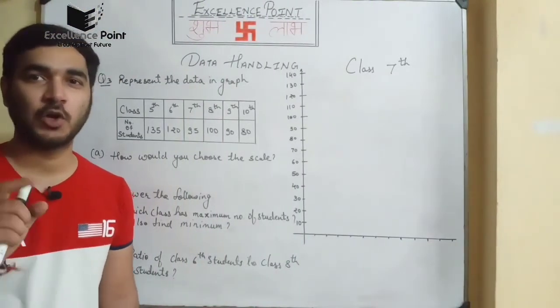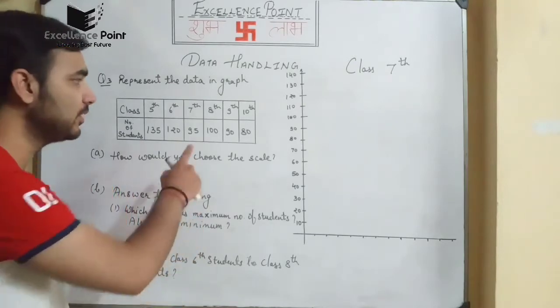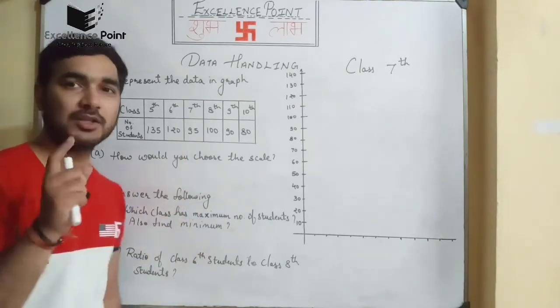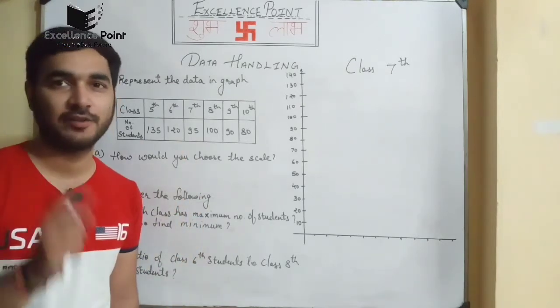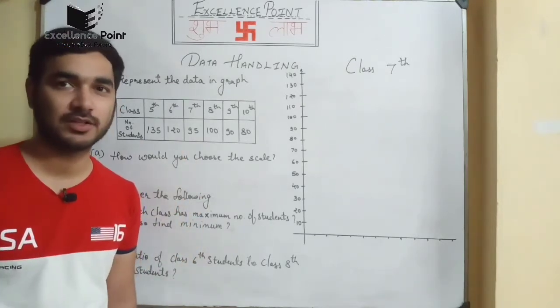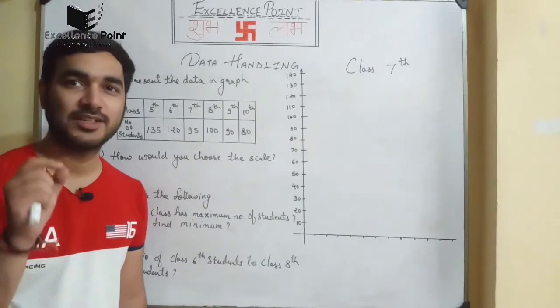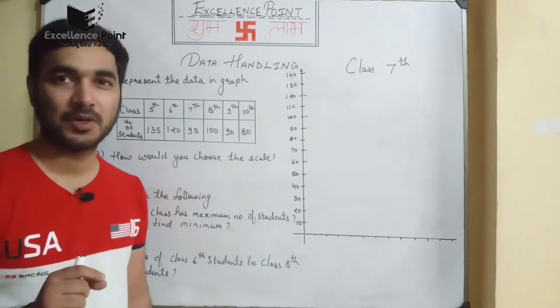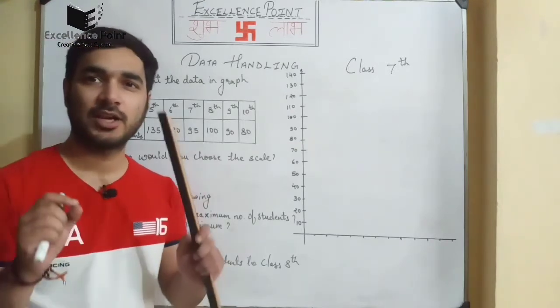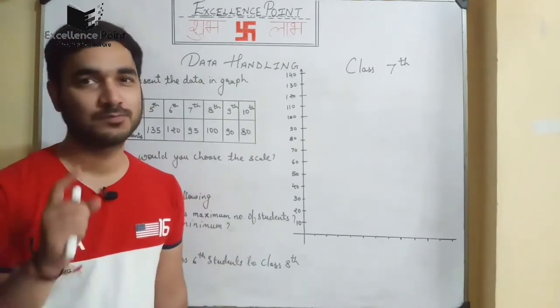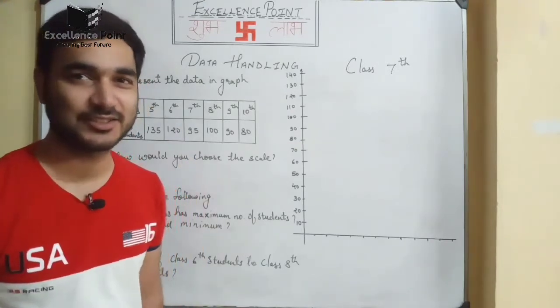In question number 3, you will observe a table, and based on this table we have to draw a graph. Take your pencil, graph paper, eraser, and ruler and start drawing.